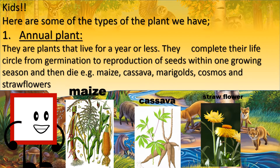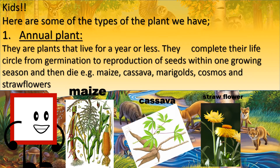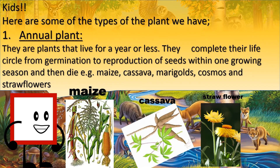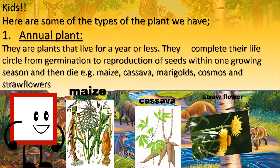Here are some types of plants. Number 1: Annual plants. They are plants that live for a year or less. They complete their life cycle from germination to reproduction of seeds within one growing season and then die. Examples are maize, cassava, marigolds, cosmos and straw flowers.